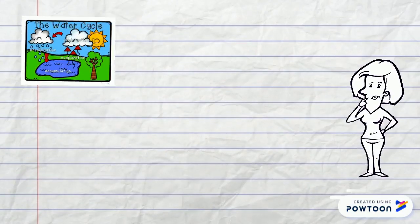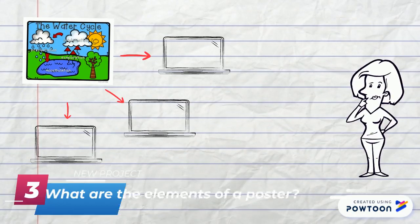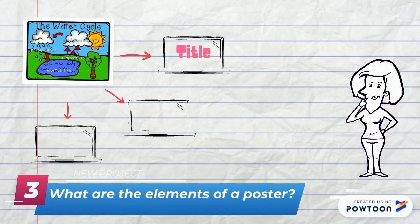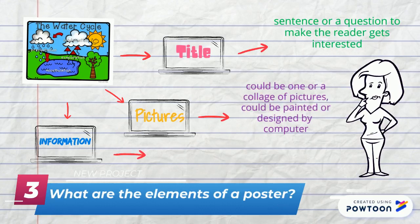What are the elements of a poster? Title, pictures, and information. The title is a sentence or a question to make the reader get interested. Pictures could be one or a collage of pictures. Information could be simple sentences that will explain something in detail.